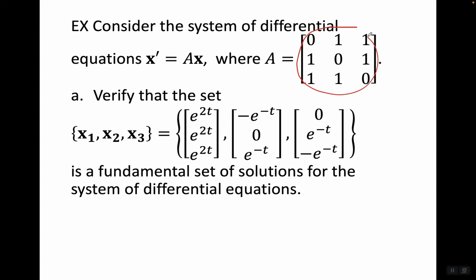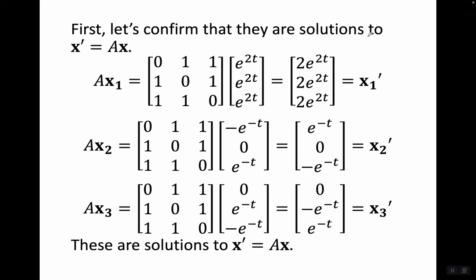We're eager for an example. Consider the system x' = Ax where A is the matrix with rows [0,1,1], [1,0,1], [1,1,0]. Verify that the set {x1, x2, x3} = {(e^{2t}, e^{2t}, e^{2t}), (-e^{-t}, 0, e^{-t}), (0, e^{-t}, -e^{-t})} is a fundamental set of solutions. First, let's confirm they are solutions. Computing Ax1 gives (2e^{2t}, 2e^{2t}, 2e^{2t}), which is exactly x1', so x1 checks out.